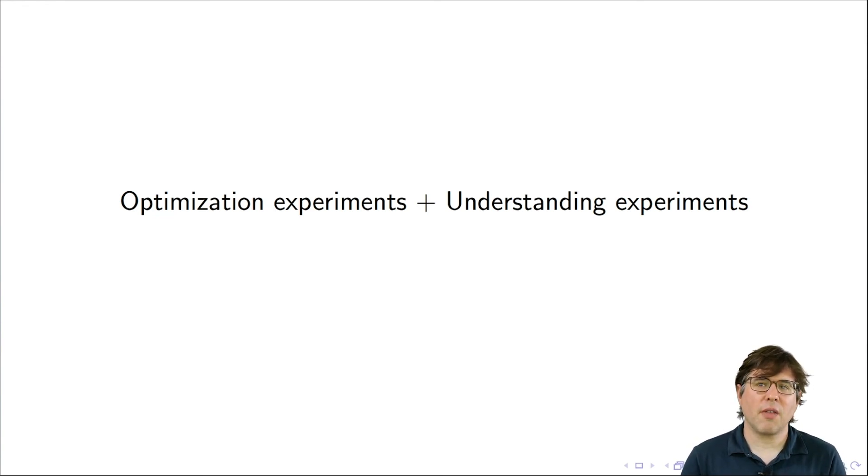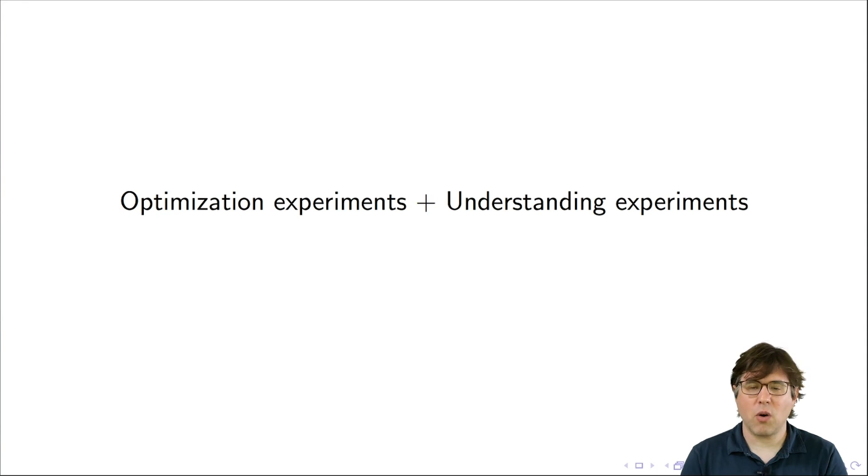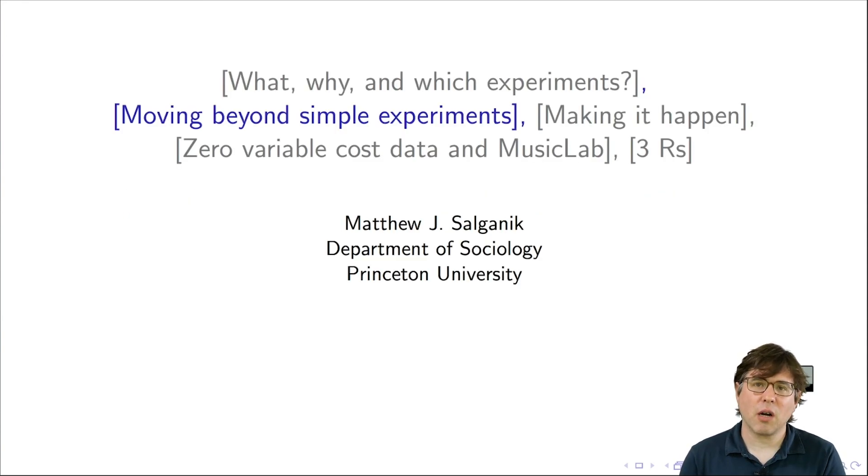The ability to do both optimization and understanding together will be particularly important as you look for partners for your experiments — for instance, partnering with companies and organizations allows researchers to work at much greater scale. If you're going to partner with an organization, it will be especially important to design experiments that achieve both goals: helping with some kind of optimization and yielding some kind of understanding. Stay tuned for the next video, where I'll talk more about making it happen — the strategies researchers can use and the trade-offs involved. Thank you.